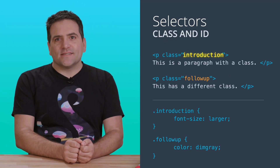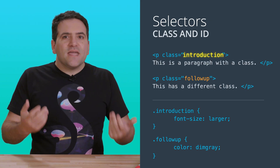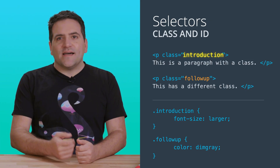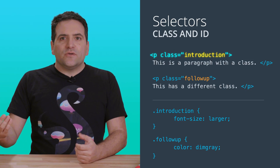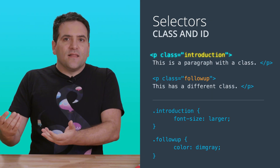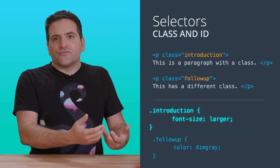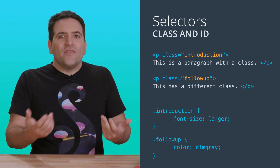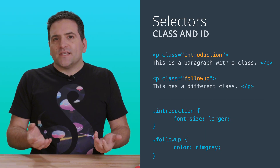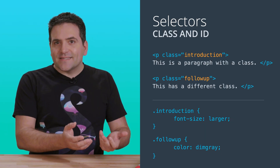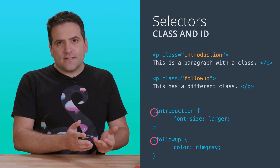So how do you create a class? All you have to do is make up a name for that class and start using it. You add the class attribute to some HTML elements and create a CSS ruleset with the same name. The way you apply a CSS ruleset to a class is to write a selector that starts with a dot.